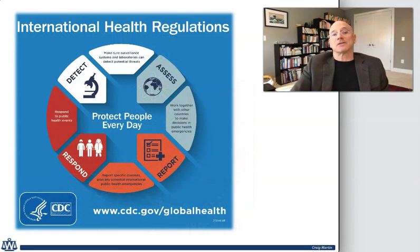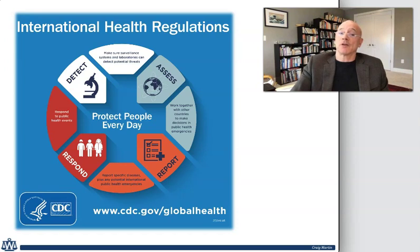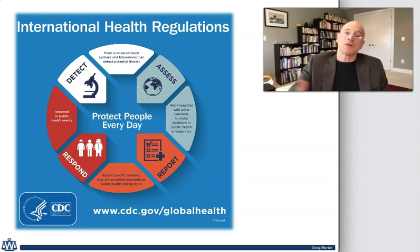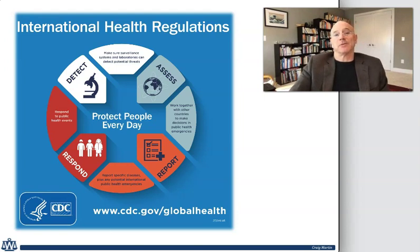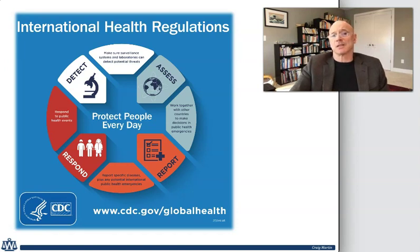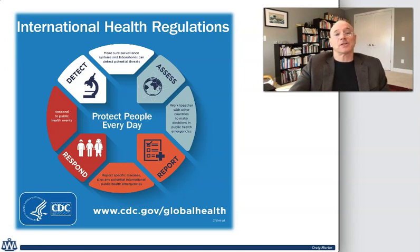The purpose of the IHR is to — quote — "prevent, protect against, control, and provide a public health response to the international spread of disease in ways that are commensurate with and limited to public health risks and which avoid unnecessary interference with international traffic and trade." The IHR imposes a number of specific due diligence obligations on states, including creating and maintaining the capacity to deal with an epidemic and obligations to immediately inform the WHO and the international community after the emergence or spread of infectious diseases that pose an international threat. Significantly, it also imposes an obligation to base health measures on scientific principles and to collaborate with other states and cooperate with the WHO to the extent possible.